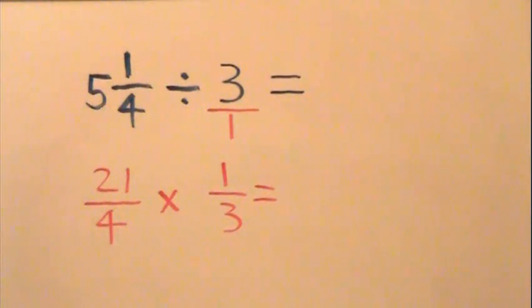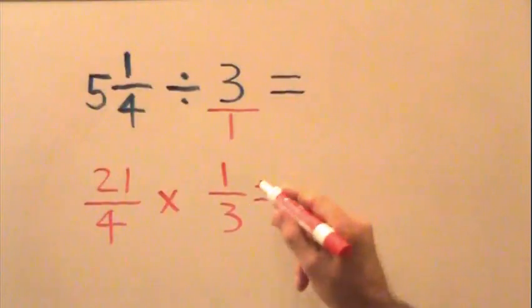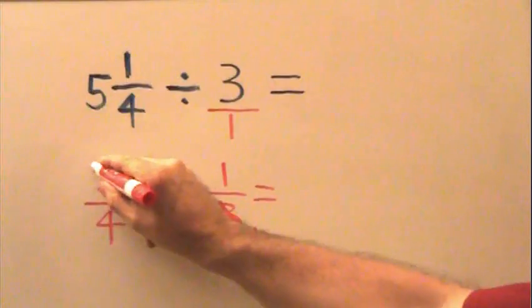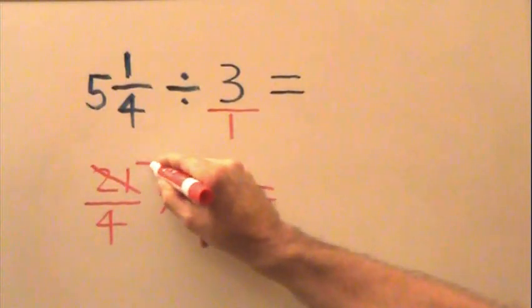Next, we check to see if we can cross-cancel. In this case, we can. 3 is a factor of 21. 3 goes into itself once. 3 goes into 21, 7 times.